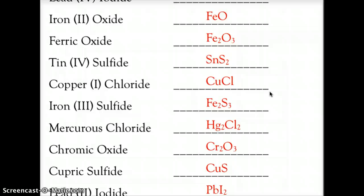Mercurous chloride: mercurous is the Hg₂ form with a plus-two charge, and chlorine has a minus-one charge, so Hg₂Cl₂. Chromic oxide: Cr₂O₃. Cupric sulfide: cupric is the plus-two form of copper, so that would be CuS. Lead(II) iodide: PbI₂.